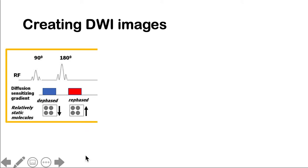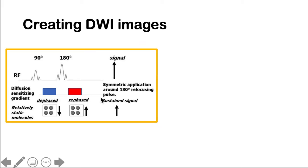For example, a water proton within an infarcted tissue will not be able to move much. Therefore, it will get hit by the defacing gradient and the refacing gradient, and this results in an increased or sustained signal.